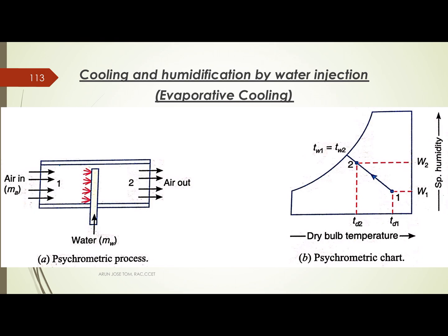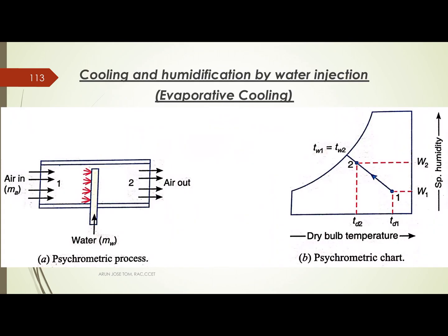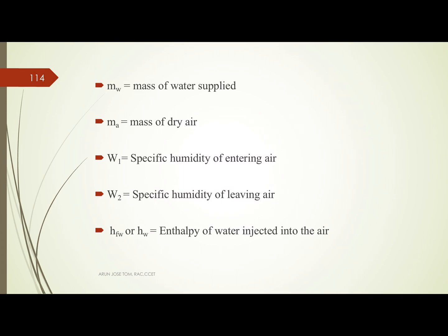MW is the mass of water supplied. MA is the mass of dry air. W1 is the specific humidity of entering air. W2 is the specific humidity of leaving air, where 1 is the inlet condition and 2 is the exit condition.